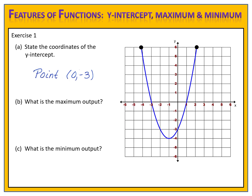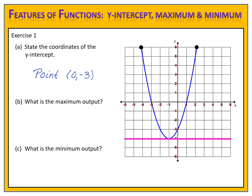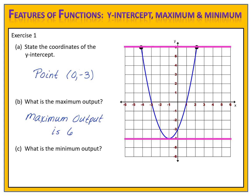Parts B and C ask us to identify the maximum and then the minimum output of the function. For maximum and minimum, I'm looking for the highest and the lowest outputs. For maximum, I'm looking for that highest value of y — I see that that high y value is 6, so the maximum output is 6. For the minimum, I'm looking for the low y value. That lowest y value is negative 4, so the minimum output is negative 4.